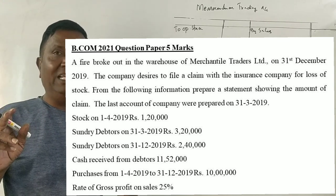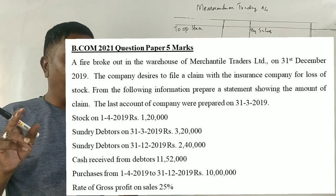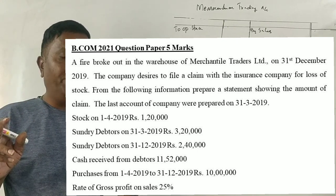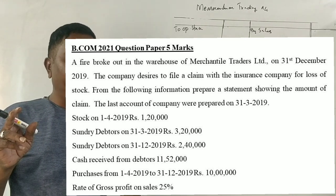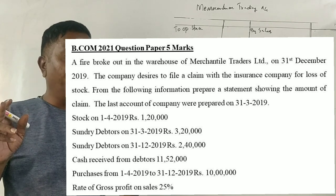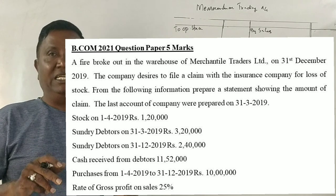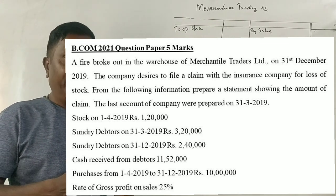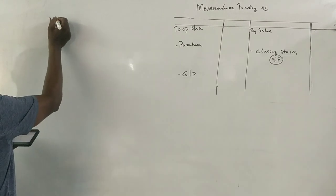On 31st December 2019, the stock was destroyed. The company decides to file a claim with the insurance company for the lost stock. From the following information, prepare a statement showing the amount of claim. The last accounts of the company were prepared on 31st March 2019.